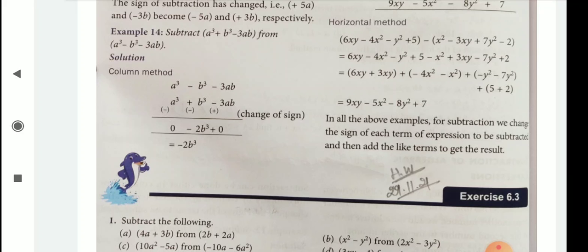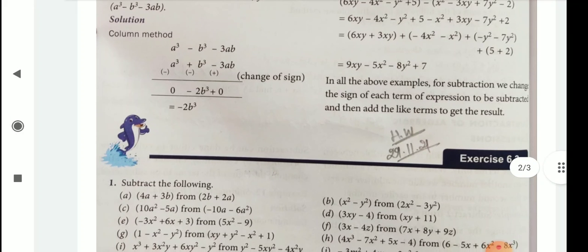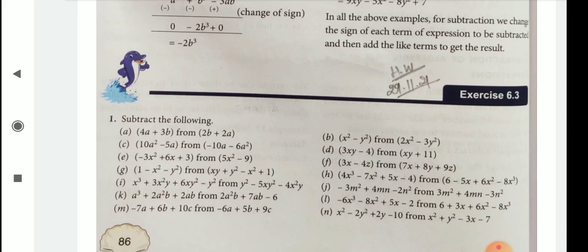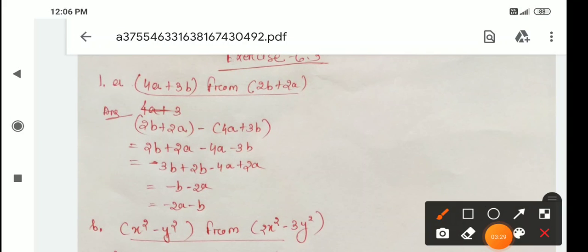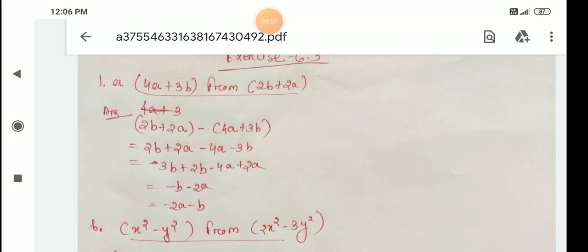Then comes to exercise 6.3, one number. Subtract the following. Here children, a bit. You see 4a plus 3b from 2b plus 2a. So first of all, we write like this: 2b plus 2a minus. This is the first term we write first. Then this is second. So we write first 2b plus 2a minus 4a plus 3b.